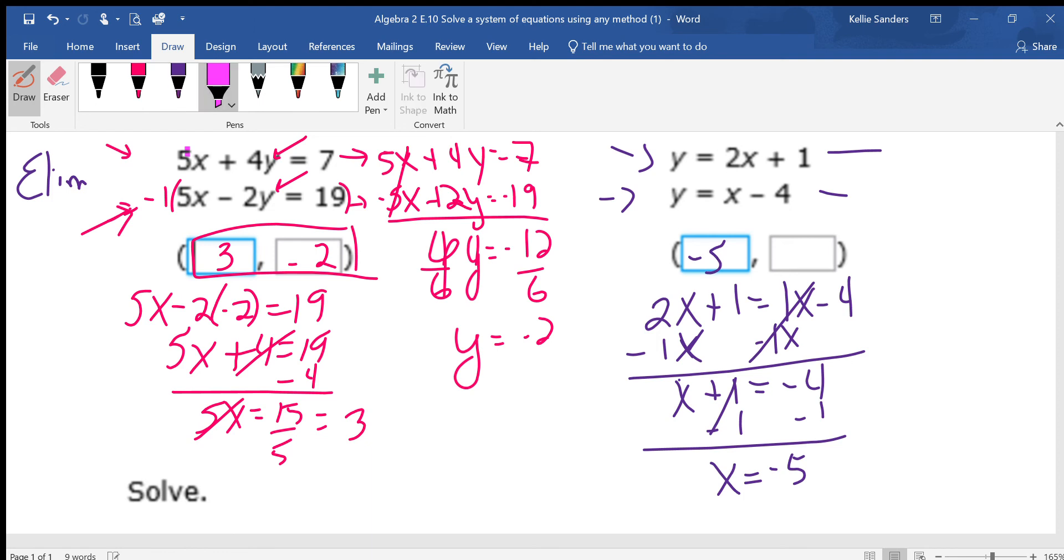Put negative 5 into that x or that x. I'll do the bottom one. So y equals what's x? Negative 5 minus 4. So y equals negative 9.